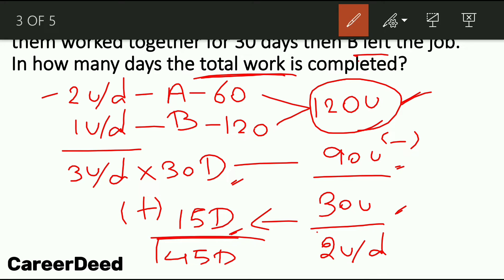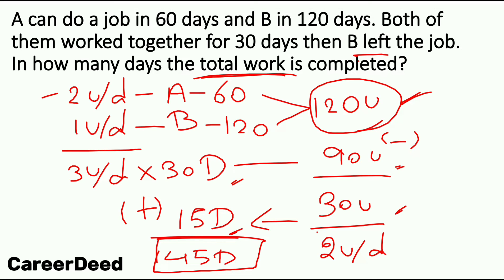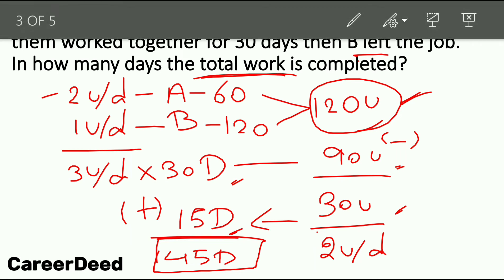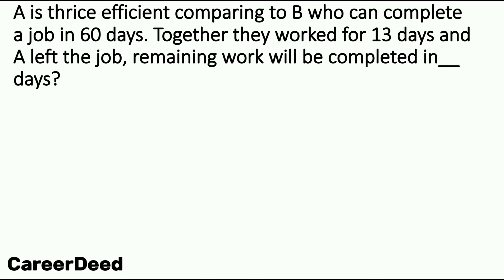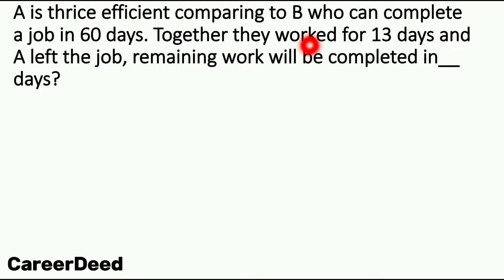So in total, 30 + 15 = 45 days the work got completed. The answer is 45 days. Hope you understood! Last question: A is thrice as efficient compared to B, who can complete a job in 60 days. Together they work for 13 days and A left the job. The remaining work will be completed in how many days?